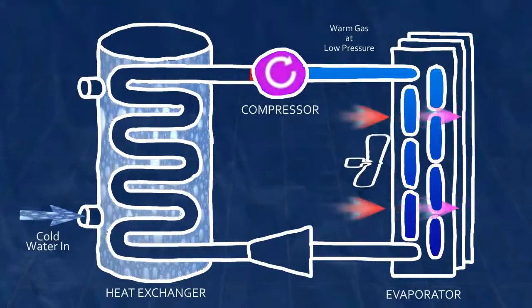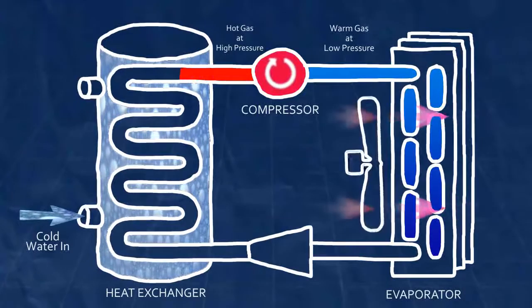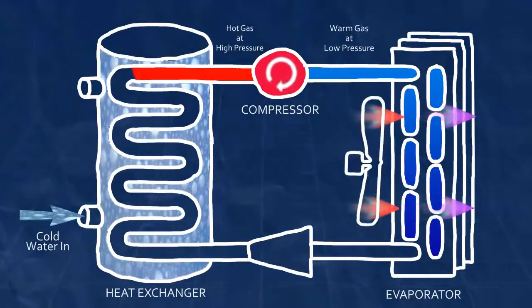The compressor next forces the now high temperature, high pressure gas further along the cycle into another heat exchanger called the condenser.